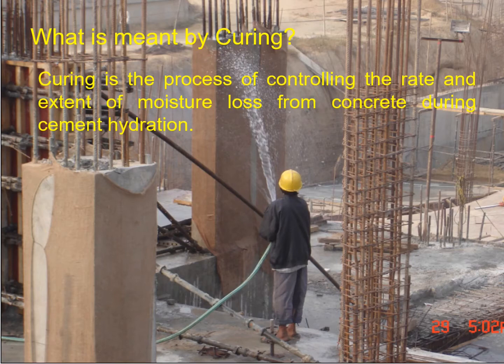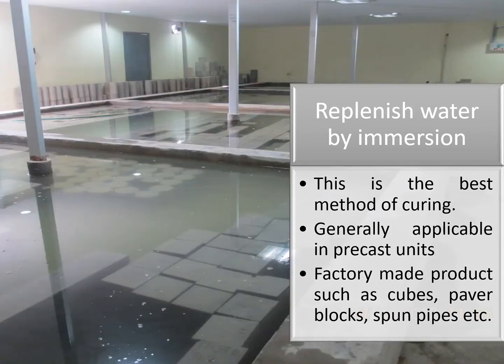By checking the strength of that particular cube, we can ensure that the concrete being produced from the batching plant is meeting the requirements specified in IS 456 as far as the defining of the grade of concrete is concerned. We take this as replenishment of water with immersion.